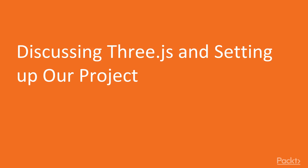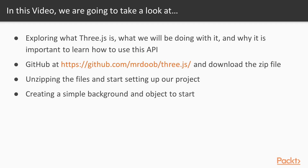In video one we're discussing Three.js and setting up our project. Three.js is a 3D graphics library that is completely open source and written in JavaScript. The creator is Ricardo Cabello, also known as Mr. Doob, his profile name. He created Three.js and added a WebGL renderer to it, which is a 3D rendering tool that makes WebGL a lot more accessible to developers.